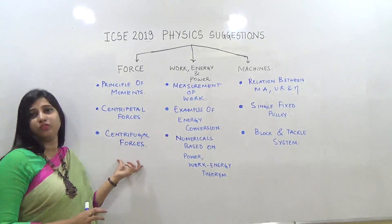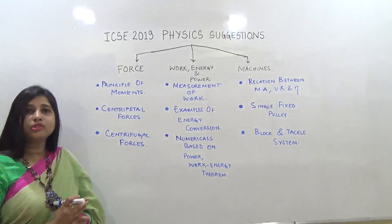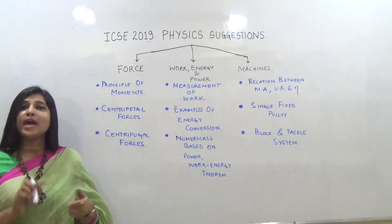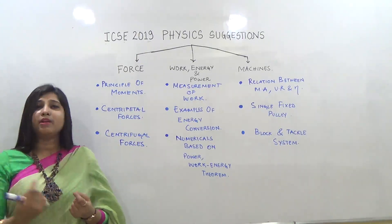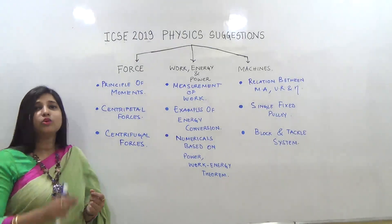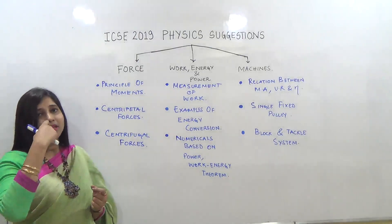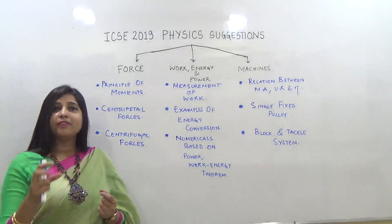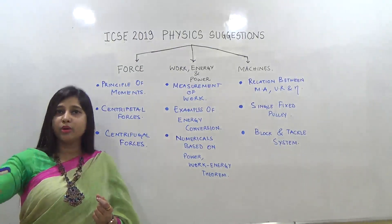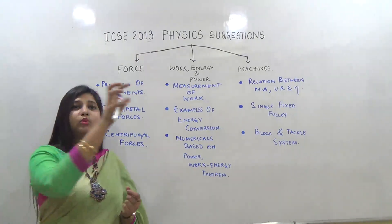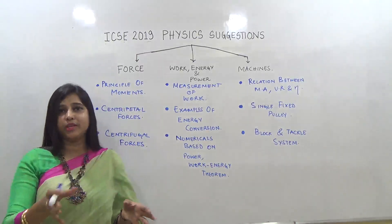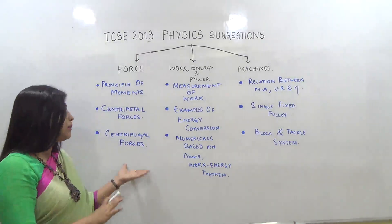Under centrifugal force, you have the definition, and then you have the merry-go-round example from your book. In that example, we have two persons — one standing on the platform of the merry-go-round and the other standing outside. Questions about the observations of those two persons can come in your paper.